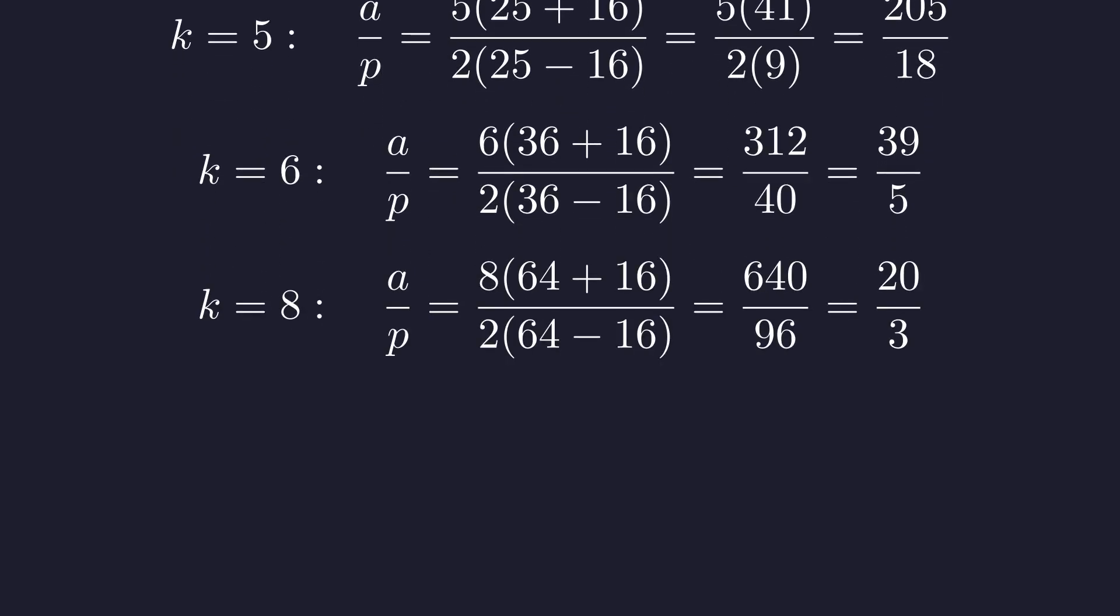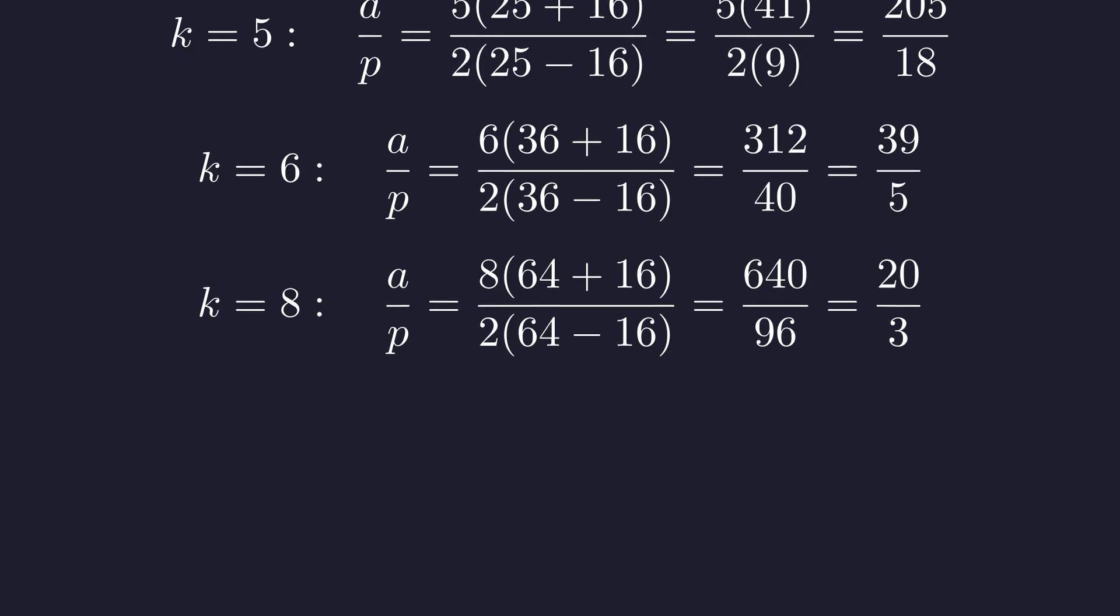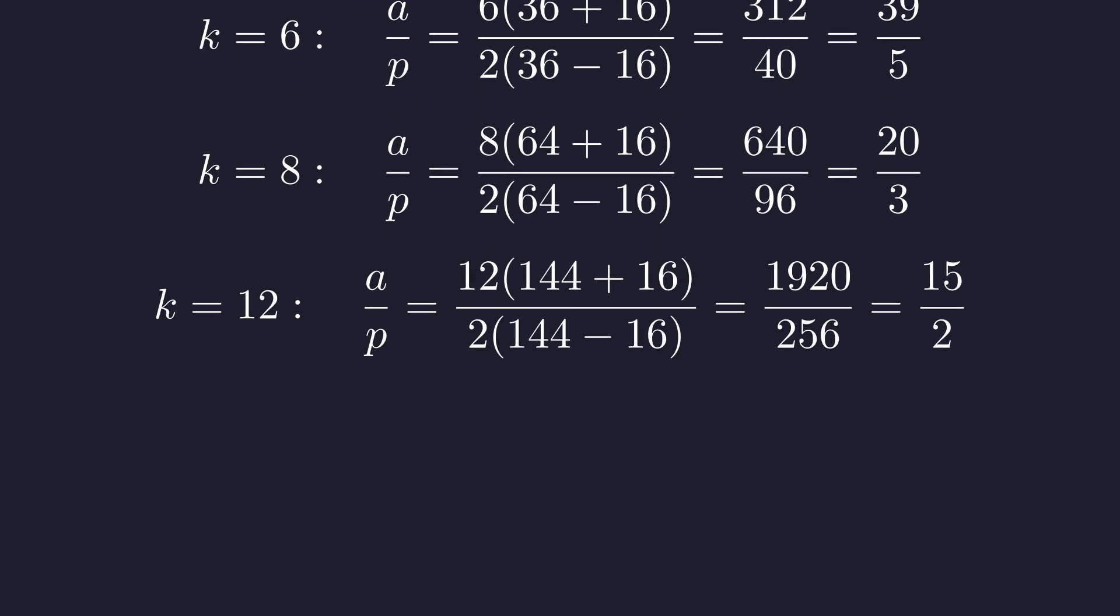When k equals 8, we get 3 in the denominator. 3 is prime, giving us p equals 3. And when k equals 12, the denominator is 2. 2 is prime, so p equals 2 works too.